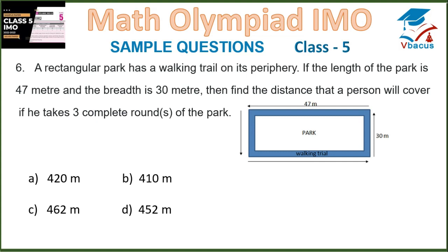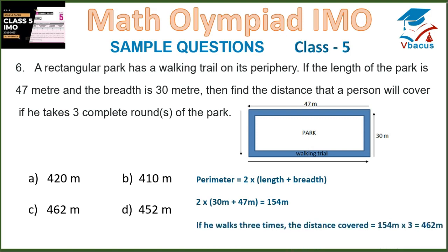Question 6: A rectangular park has a walking trail on its periphery. If the length of the park is 47 meters and the breadth is 30 meters, find the distance a person will cover if he takes 3 complete rounds of the park. Perimeter is equal to 2 into length plus breadth, so 2 into 30 plus 47 is 154 meters. If he walks 3 times, the distance covered is 154 meters times 3, that is 462 meters, which is in option C.